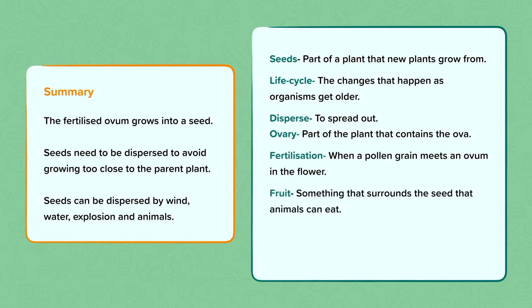Fruit: something that surrounds the seed that animals can eat. Explosion: a type of seed dispersal where the seeds are thrown far away from the parent plant out of pods.